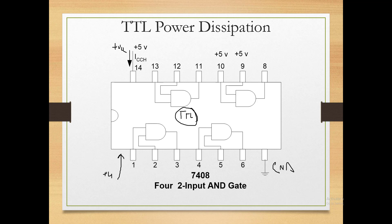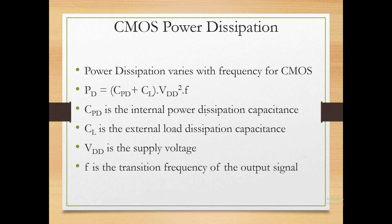For CMOS: the power dissipation of an AHC CMOS gate is 2.7 microwatts under static conditions, and 170 microwatts at 100 kHz. In CMOS technology there is an internal capacitor that charges and discharges as logic toggles between 0 and 1. The power dissipation of CMOS increases with frequency — frequency here means how fast the logic signal transitions from 0 to 1.